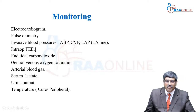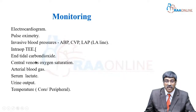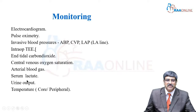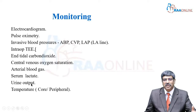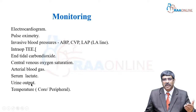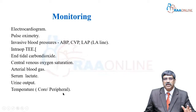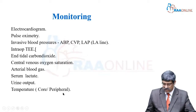Additional monitors include end-tidal carbon dioxide, oxygen saturation — particularly mixed venous oxygen saturation — arterial blood gas, serum lactate, urine output, and core and peripheral temperature. These are all the various monitors required for surgical correction.